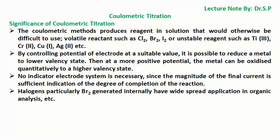Significance of coulometric titration: The coulometric method produces reagents in solution that would otherwise be difficult to use, such as volatile reactants like Cl₂, Br₂, I₂, or unstable reagents such as Ti(III), Cr(II), Cu(I), Ag(II), etc.